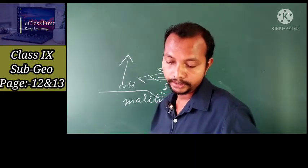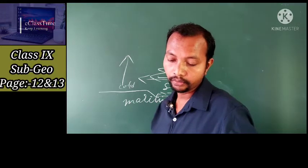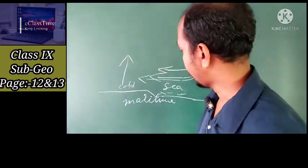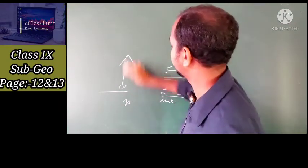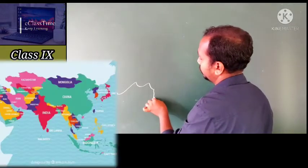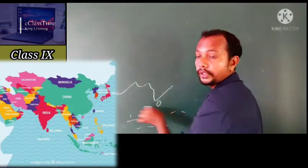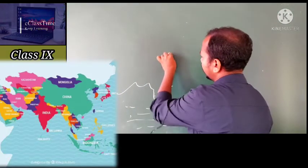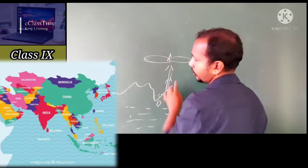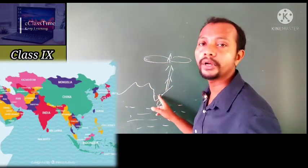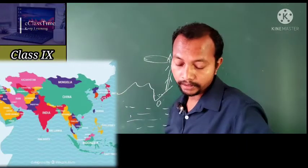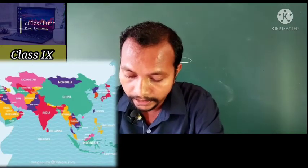One more point mentioned in your book: in the interior of a continent, temperature increases. In the inner part of the continent — for example, the inner part of Asia — it will be hotter, because it is far away from the sea. Though there are some water bodies, it is in the inner part of the continent and will be hotter. The middle part of the continent experiences continental climate.